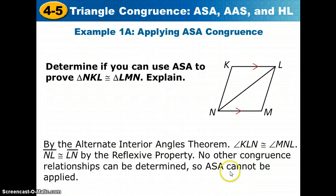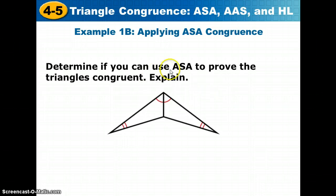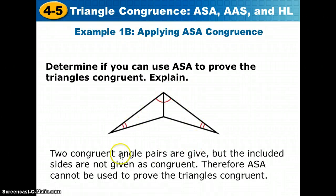So we cannot apply angle-side-angle. Let's try here. We want to determine if we can use angle-side-angle to prove the triangles are congruent in example 1b. Well, we have two congruent angles here and two congruent angles here, and then they share this side. But the included sides are not given to us as congruent. The included sides would be these top sides of each angle. We don't know that they are congruent. Two congruent angle pairs are given, but the included sides are not given as congruent. Therefore, angle-side-angle cannot be used to prove the triangles are congruent. So the answer again here is no.